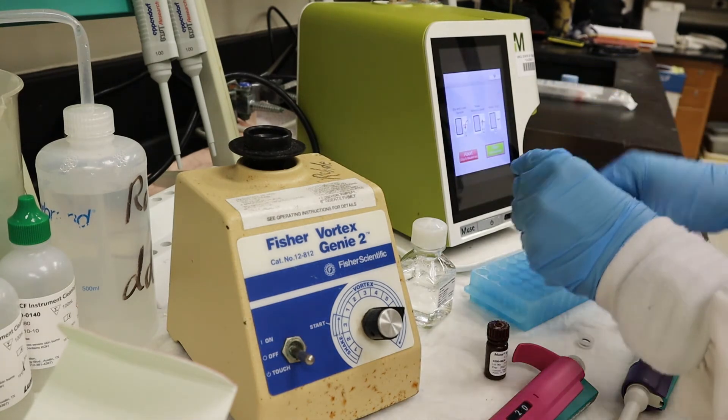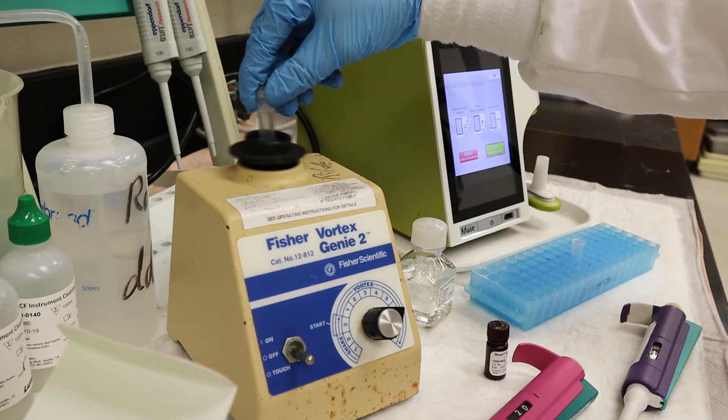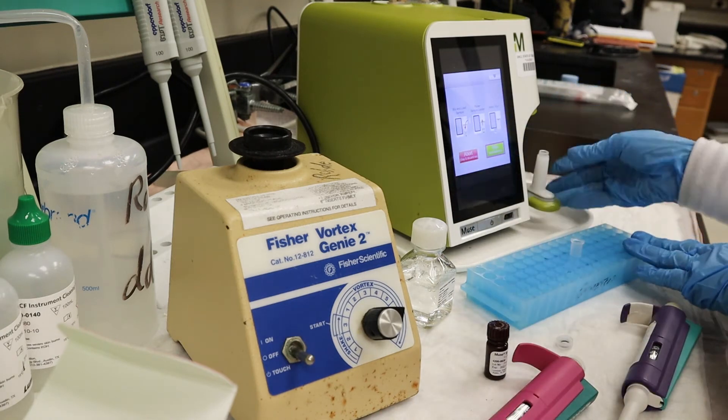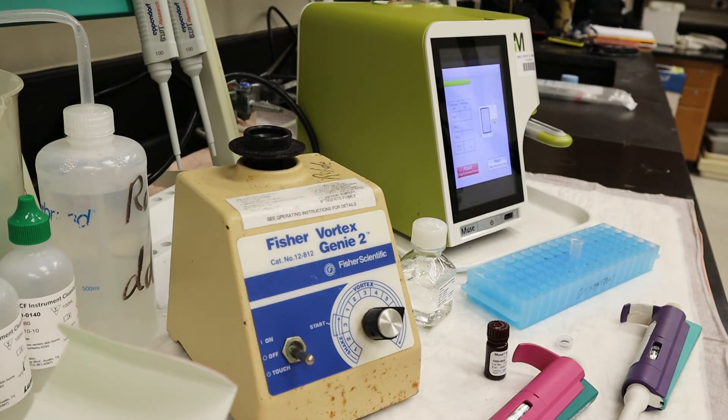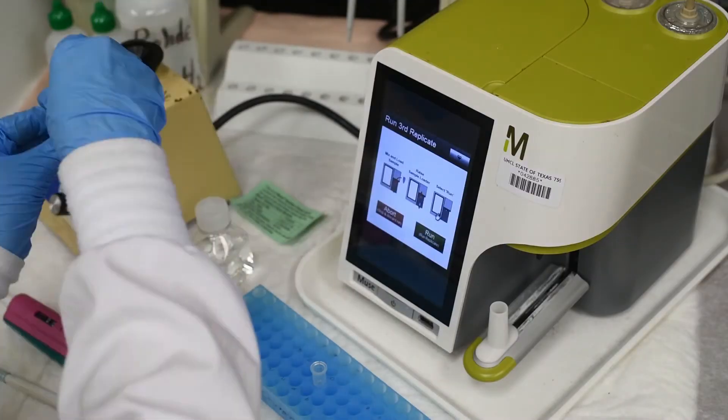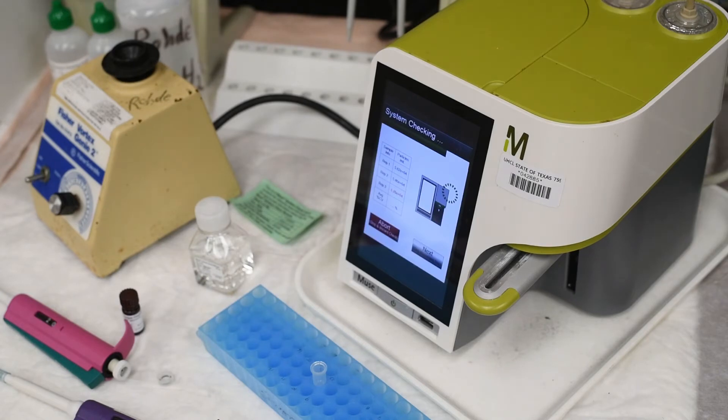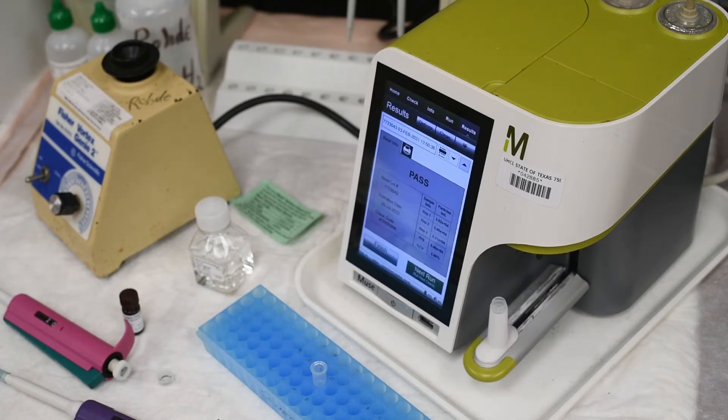Once the first replicate has passed, the sample loader will eject the tube. Remove and recap the tube, vortexing once more. You will complete this step a final time for the third replicate. Once all three replicates have completed and passed, the system check will reflect as successful.